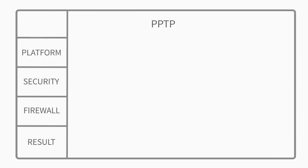PPTP, or Point-to-Point Tunneling Protocol, was developed by Microsoft for creating VPN over dial-up networks. As such, PPTP has long been the standard protocol for corporate VPN networks. PPTP is easy to set up using the OS built-in VPN features. Their clients are built into many platforms, including Windows, Mac OS, Android, iOS, and even some routers, so you don't need to install additional software to set up PPTP.